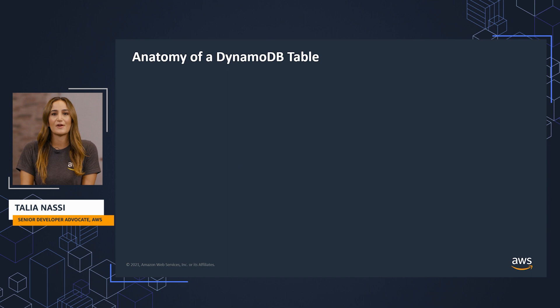There are five basic concepts in DynamoDB – tables, items, attributes, primary keys, and secondary indexes.